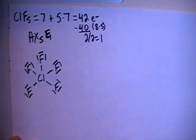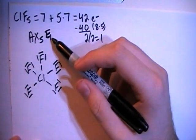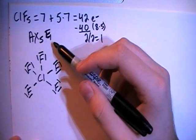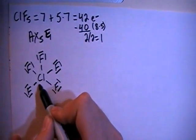Alright, so there we go for that. And now we also have to fill in this 1 non-bonding pair of electrons on the central chlorine. So we'll just put that pair right there.